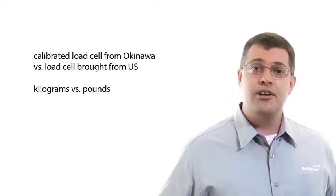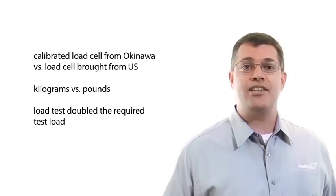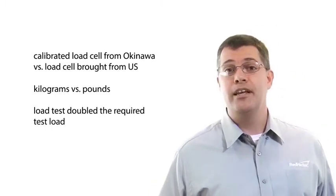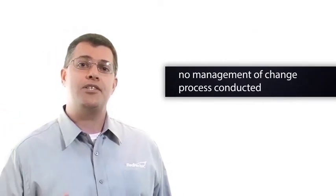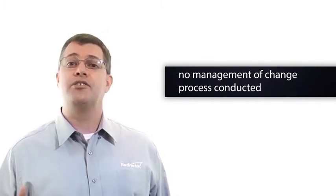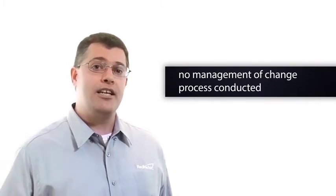In essence, the load test doubled the required test load. And fortunately, the chain and rigging didn't fail. All of this happened because there was no management of change process conducted to assess the effects of using a load cell different from the one the project team had brought with them.